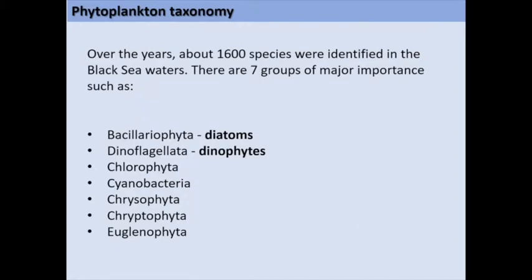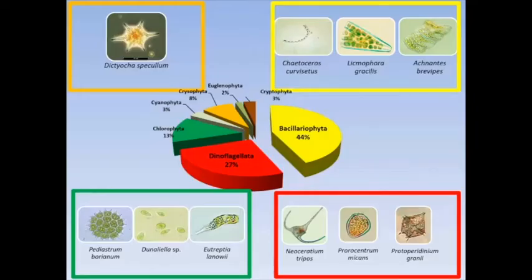Over the years, about 1,600 species were identified in the Black Sea waters. Among the most important seven groups are the diatoms, the dinoflagellates, the chlorophytes, cyanobacteria, chrysophytes, cryptophytes, and euglenophytes. From all these species, 45% of the total number is represented by the diatoms, being followed by dinoflagellates with 27% and chlorophytes with 13%. The rest of the four groups are less represented with only 6% in total.